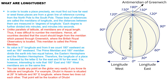What are longitudes? In order to locate a place precisely, we must find out how far east or west these places are from a given line of reference running from North Pole to South Pole. These lines of reference are called meridians of longitude. The distance between them is measured in degrees of longitude. Each degree is further divided into minutes, and each minute into seconds. Unlike parallels of latitude, all meridians are of equal length.